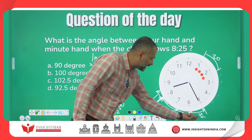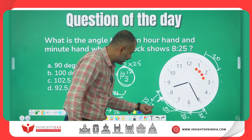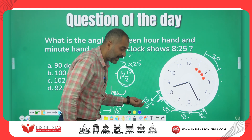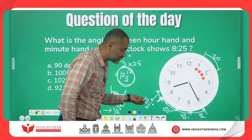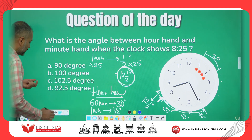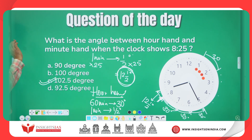So the total angle is 30 plus 30 plus 30 — that is 90 degrees — plus 12.5 degrees, giving 102.5 degrees. The answer is option C.